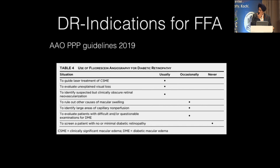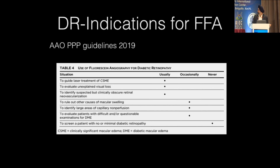The indications for doing FFA in diabetic retinopathy are very clear. We normally follow the guidelines given by the American Academy or preferred practice patterns. The main indications remain: if you want to treat CSME, evaluate visual loss, or want to know whether there is any obscure or suspected retinopathy — those are the only indications where we are doing fundus fluorescein angiography nowadays.